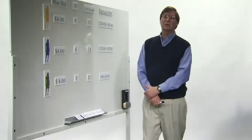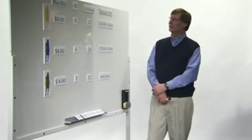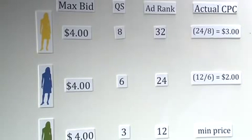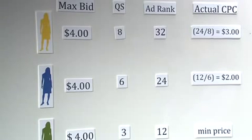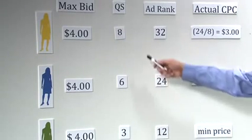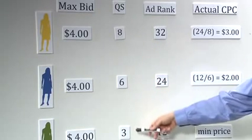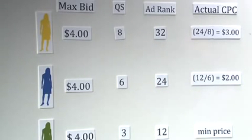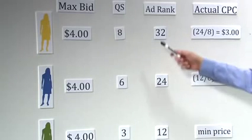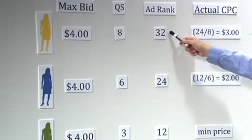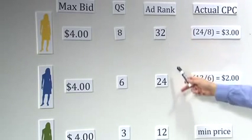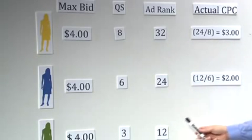So let's see how this works in a slightly more complicated example. Here we've got three advertisers and they're each bidding the same price. So we've got max bid is $4 for each of them. But they have different qualities. In this case, the quality is 8, 6, and 3. So the ad rank is determined by multiplying the bid times the quality to give us ad ranks of 32, 24, and 12.